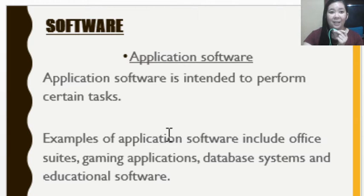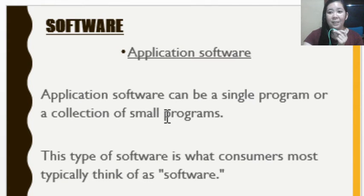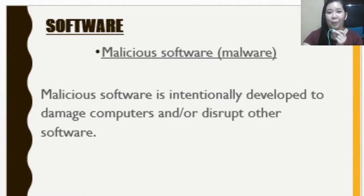Another category is application software, which is intended to perform certain tasks. Examples include office suites, gaming applications, database systems, and educational software — such as MS Word, PowerPoint, and Excel. Application software can be a single program or a collection of small programs. This is the type of software consumers most typically think of as software, and is the most common for everyday users.